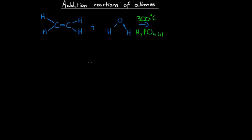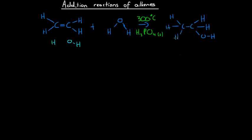The same way that the chlorine molecules broke into individual atoms and added across the double bond, the water molecule breaks into an OH group and an H group. The H bonds to one carbon and the OH group bonds to the other carbon, and what we end up with is ethanol. So hydrogen bonds to one carbon, the hydroxyl group bonds to the other, and we form ethanol. This is an important reaction — passing steam and ethene over a solid phosphoric acid catalyst at 300 degrees Celsius produces ethanol.